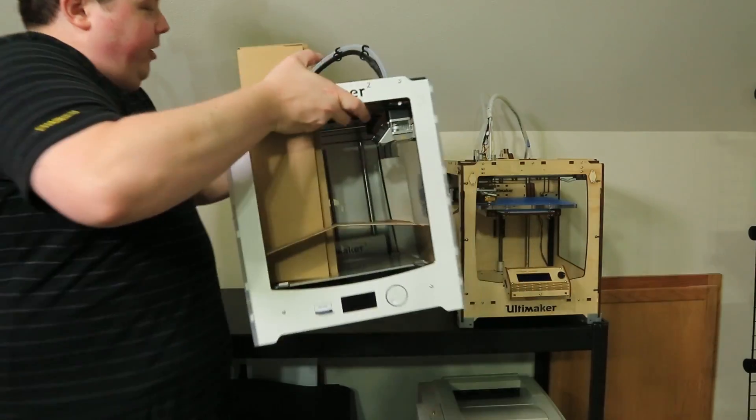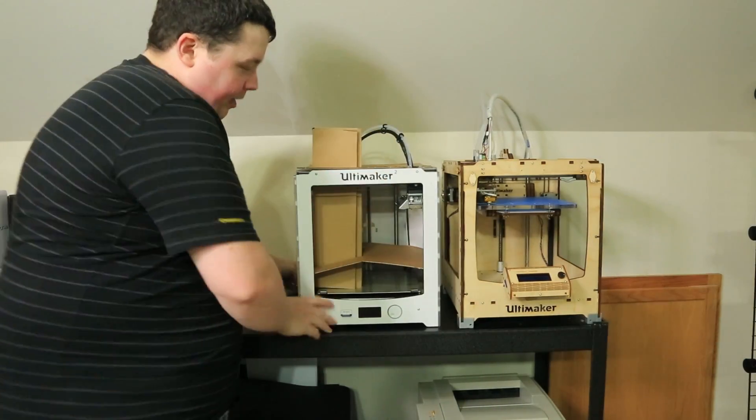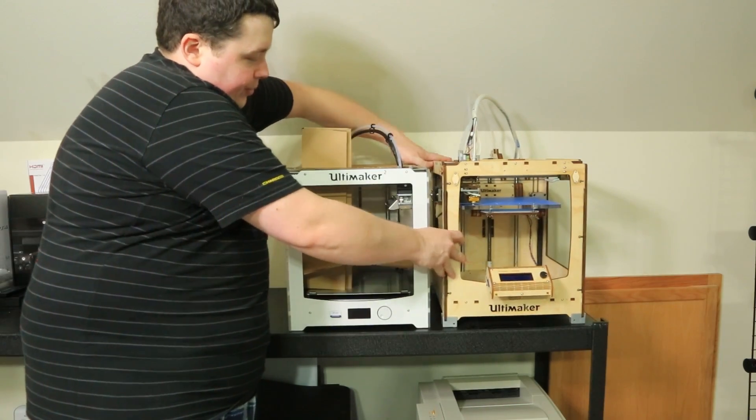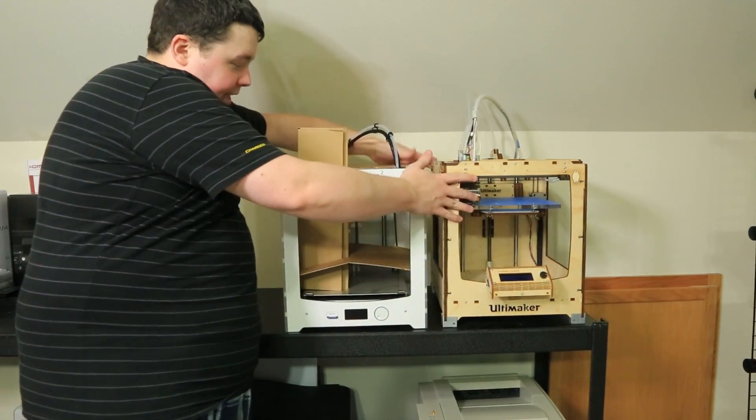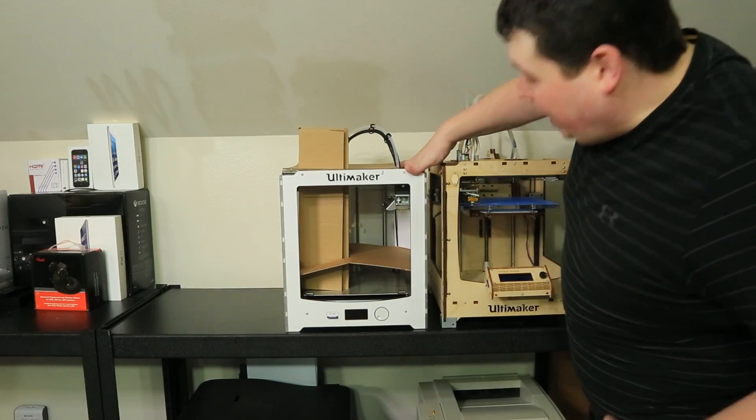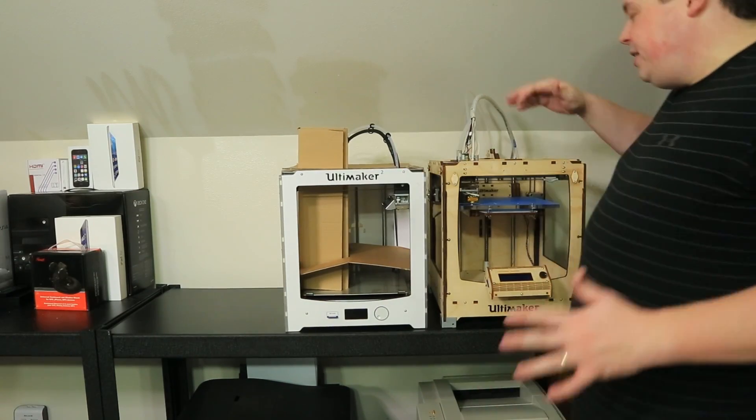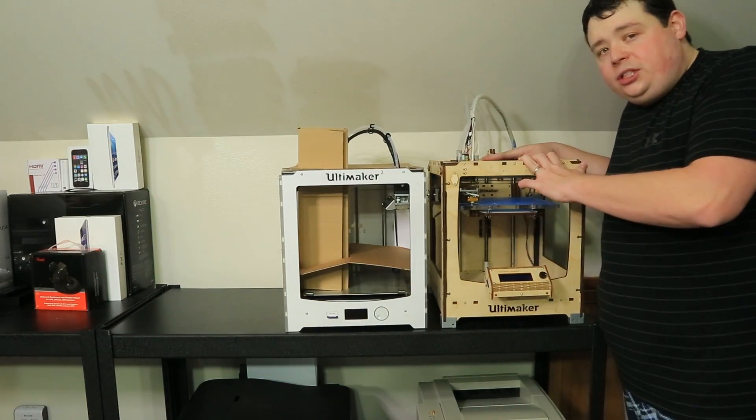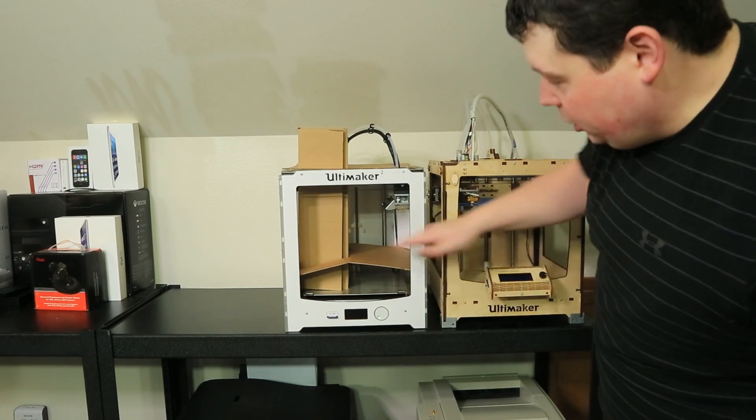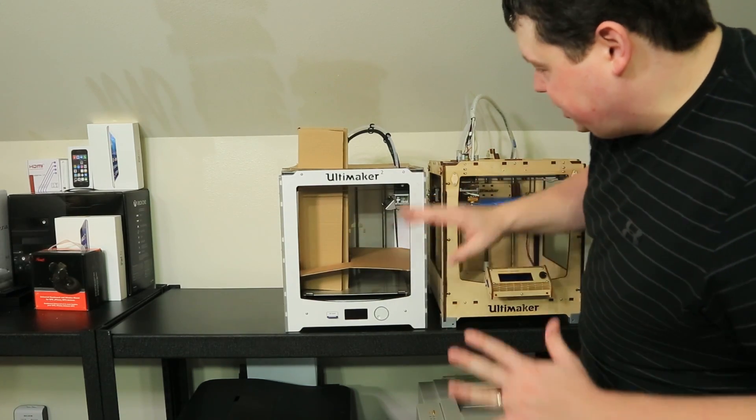Alright guys, here it is sitting right next to its brother V1 and the V2. This is awesome seeing these two guys together. I've been waiting a really really long time for this. Now one thing you'll notice is it's packaged extremely well. If you go back to the video where I unboxed the original Ultimaker, there was some packaging problems and some things got shifted around.